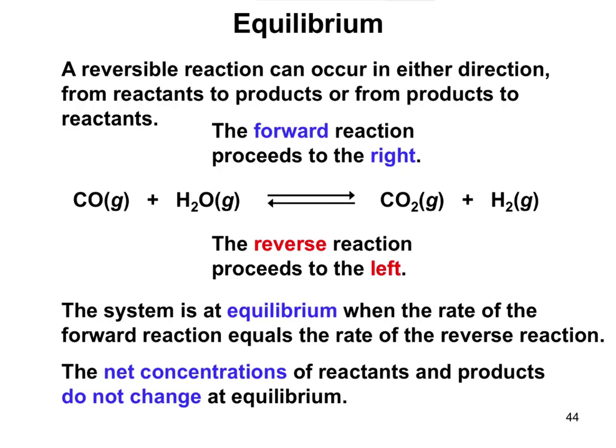In talking about these chemical reactions, a lot of reactions we can say are reversible reactions. Everything we've looked at so far has been a reaction that starts at one side and ends on the other — we've been reading left to right. The reality is there are many reactions that can occur in either direction: they can go from reactants to products, or backwards from products to reactants. For example, carbon monoxide plus water goes to carbon dioxide and hydrogen gas. The forward reaction goes left to right, and the reverse reaction goes right to left.